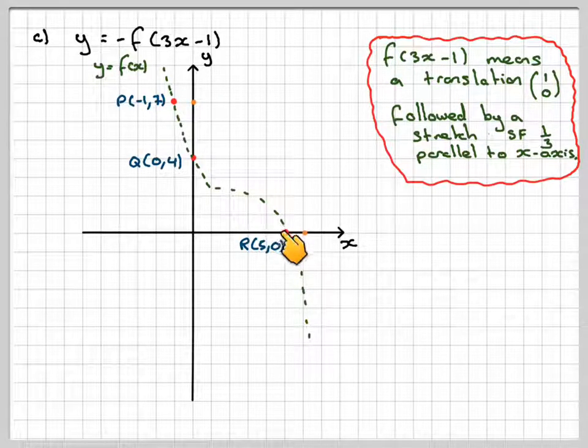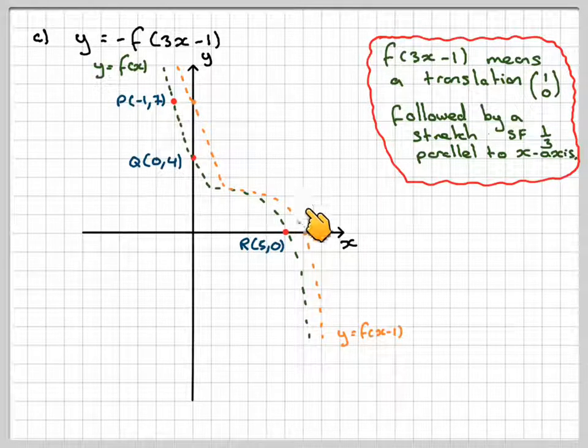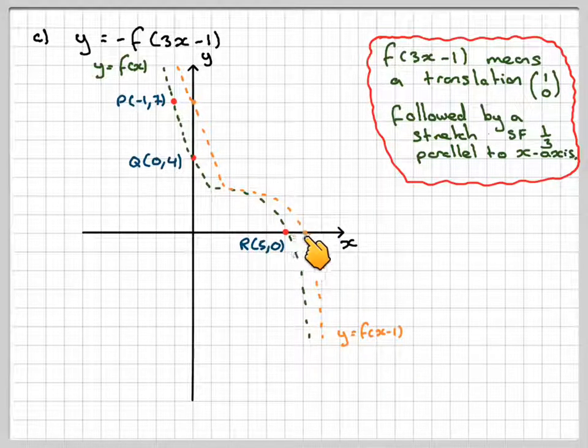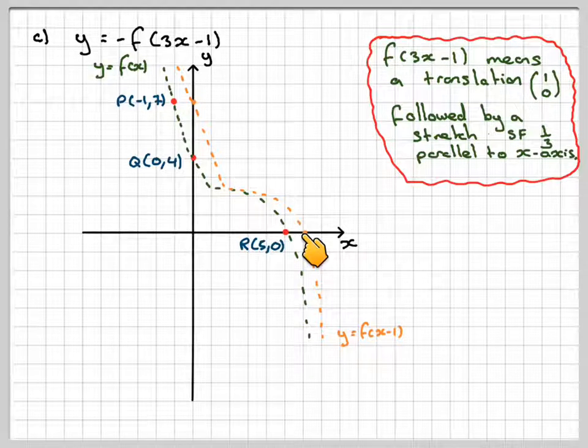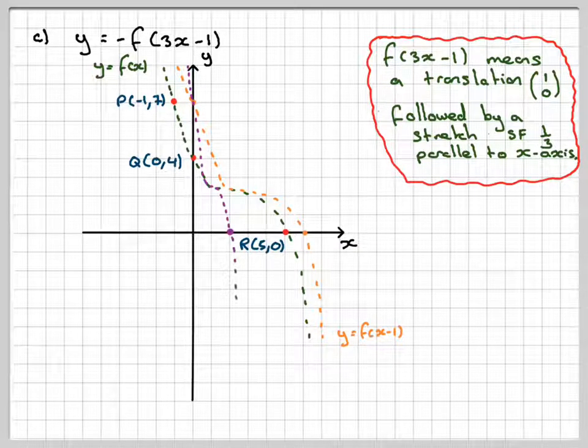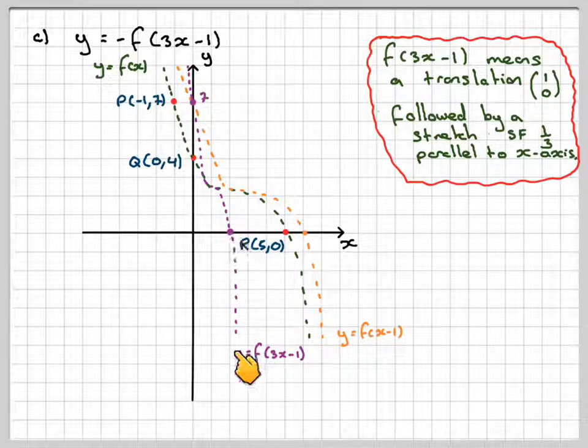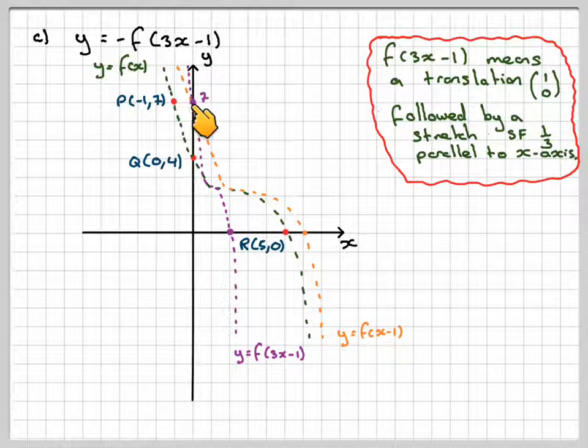So what happens is, this point moves to here, and then every point on the graph will move one unit to the right, or in the positive x-axis direction. And then what happens is that every coordinate, so we take this coordinate here, and it will go to here. This is y equals f of 3x minus 1. This particular point here would have been moved across in the translation, and during the stretch, it actually does not move.